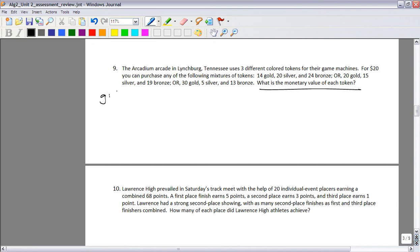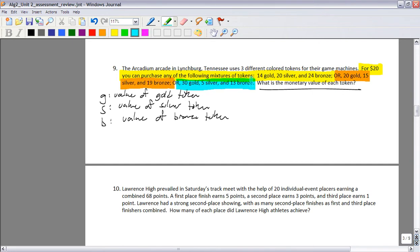So we need some variables. It says what is the monetary value of each token? Well, G is going to represent the value of gold token. S is going to be the value of silver token. And B is going to be the value of the bronze. So we're going to have three different equations we can pull out of this. So we've got, this will be the first one. This will be the second one. This will be the third one.